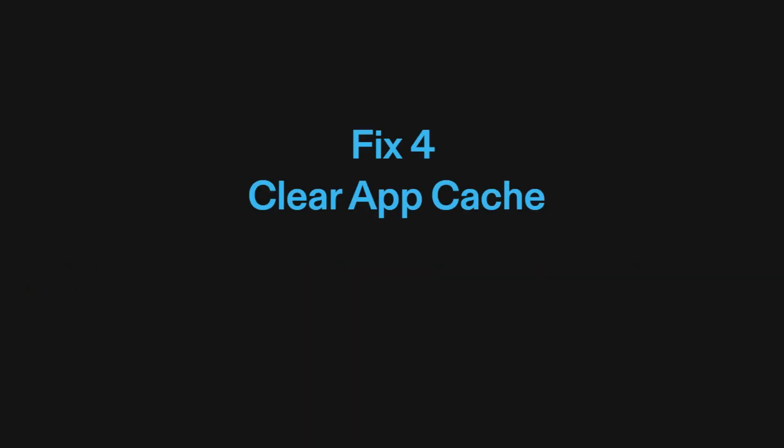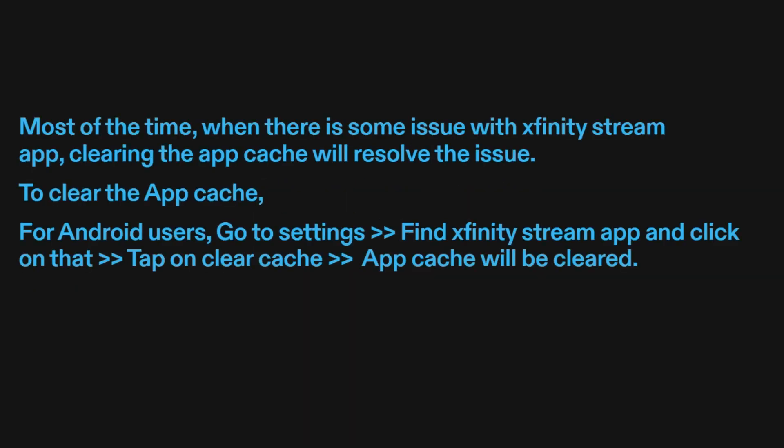Fix four: clear app cache. Most of the time, when there is some issue with the Xfinity Stream app, clearing the app cache will resolve the issue. For Android users, go to Settings, find the Xfinity Stream app, and click on it. Tap on Clear Cache and the app cache will be cleared.